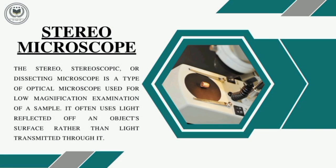Jumping to our next topic: what is a stereo microscope? A stereo microscope is also known as a stereoscope or a dissecting microscope. This instrument is well used for the low magnification of a sample. The mechanism focuses on the light getting reflected from the sample rather than the light being transmitted through it.